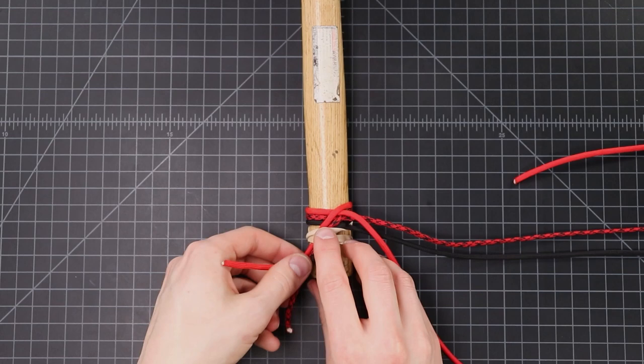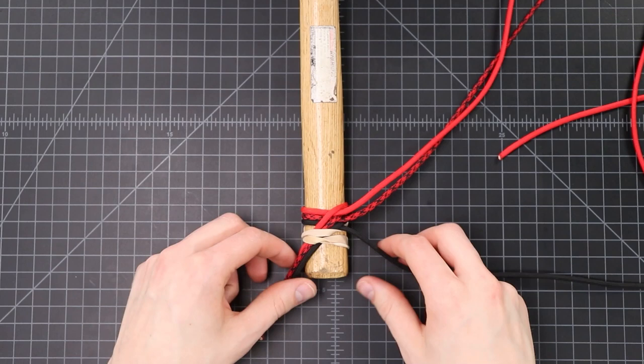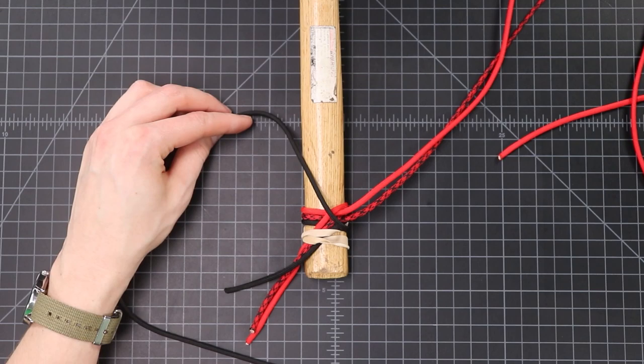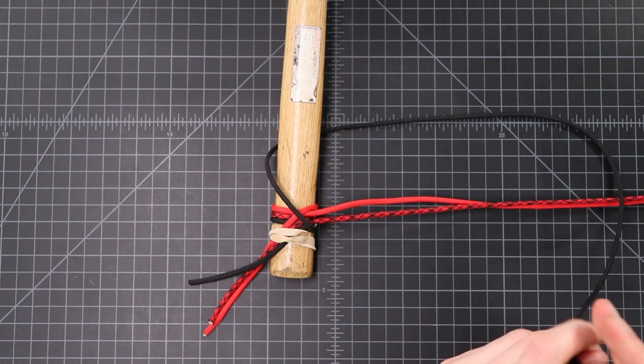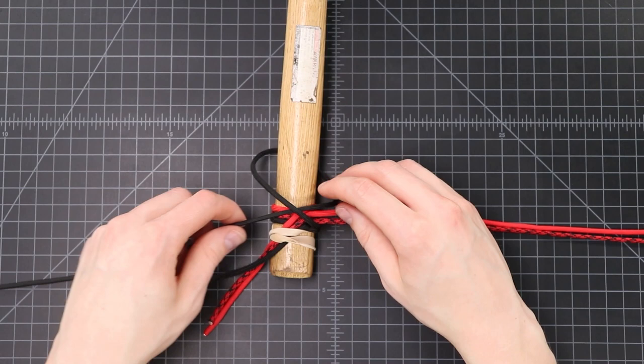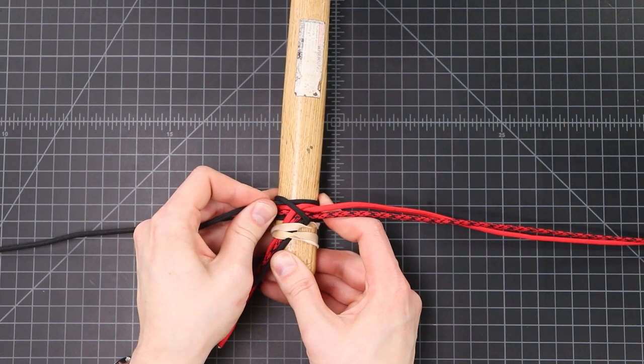They're just kind of sliding through my rubber band here so we want to keep that tight. Now we're going to take our black cord again and instead of going around the same way that we did before, we're going to come around to the left side and then put it underneath and bring our end through just like before. Just a mirror of what we did before. So we've got a stripe going across the front.